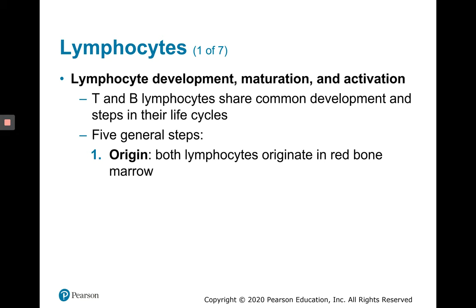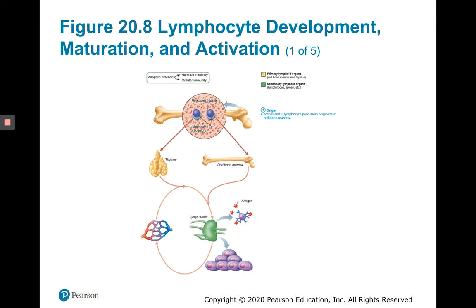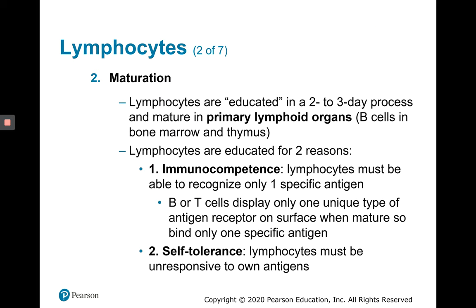T and B lymphocytes share a common development and steps in their life cycles. They both originate in the red bone marrow. Their maturation differs, however — lymphocytes are educated in a two- to three-day process and mature in primary lymphoid organs. B cells mature in the red bone marrow, while T cells mature in the thymus.